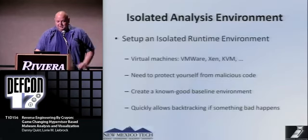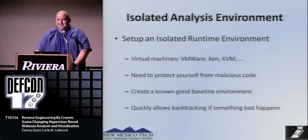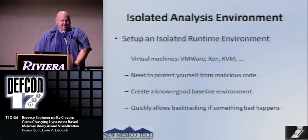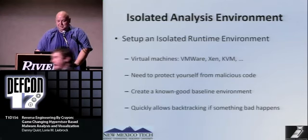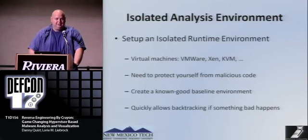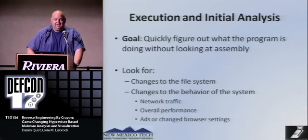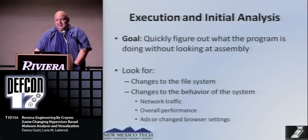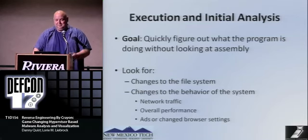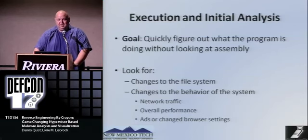Setting up an isolated runtime environment: the point is just to protect yourself from the code, assuming it's pretty difficult to actually break out of the VM. It also makes a known good baseline environment to allow you to do backtracking if something bad happens. Execution and initial analysis is just to get an extremely high-level overview of what code is doing without looking at assembly — looking for file system changes, behavior changes, network traffic, and overall performance.